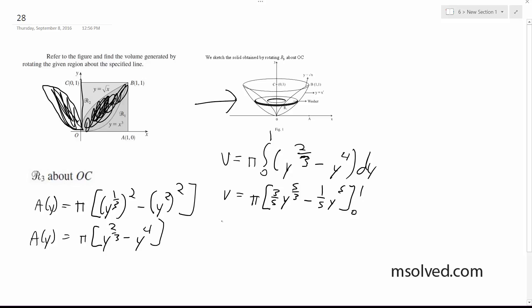So π times (3/5 minus 1/5). Volume is equal to 2π over 5. There you go.